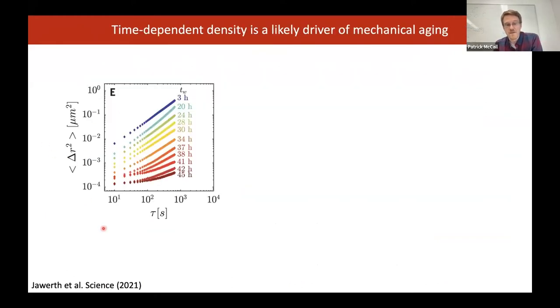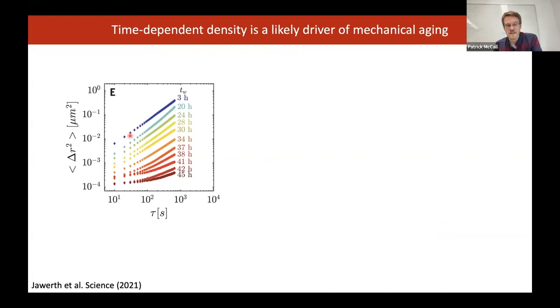All this is consistent with the idea that these time-dependent mechanical changes seen previously could result almost entirely from the time-dependent change in the density of the droplets — something that makes a lot of physical sense, but we had no access to prior to doing quantitative phase microscopy and actually being able to measure the density directly.